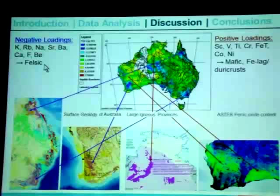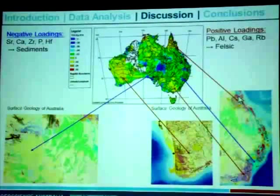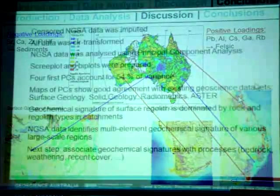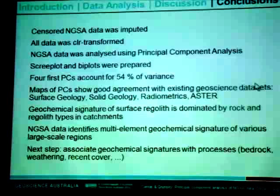Since we only have time, I won't show much on PC4, but I think you've got the message that we find good correspondence between the distributed principal components and other independent geoscience datasets. In conclusion, the NGSA data was centered log ratio transformed and principal component analysis was carried out. The four principal components account for about 54% of the variance, and the raster maps of the principal components show good correspondence with independent geoscience datasets such as surface geology, solid geology, airborne radiometrics, and the newly released mineral maps from ASTER. The geochemical signature of surface regoliths is obviously dominated by rock and regolith types, and the data identifies multi-element geochemical signatures of various large-scale regions previously undocumented geochemically.